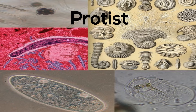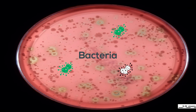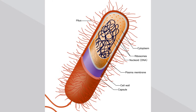Next, bacteria. Bacteria are single cells. They are prokaryotes, which means they do not have an organized nucleus or membrane-bound organelles. They do have a cell wall, and some move with a flagella.